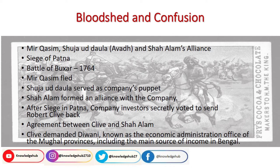Although Mir Qasim was also installed by the company, he wasn't like his father-in-law. He wasn't very flexible to the British's demands, and the company also didn't listen to his demands. Mir Qasim demanded lots of things from the company, but the company didn't pay attention. So in return, Mir Qasim started thinking about retaliation. He made an alliance with Shuja ud-Daula, who was the governor of Awadh, another province near Bengal, and with Shah Alam, who was also looking for an opportunity. All three made an alliance. Then there is an important event — the Siege of Patna — where Mir Qasim and his forces attacked the employees of the East India Company and 50 Europeans were killed.